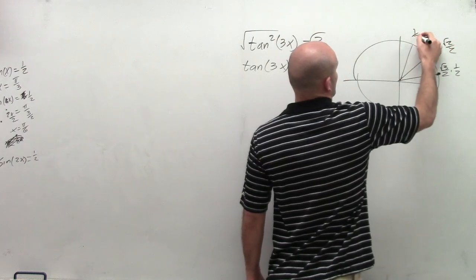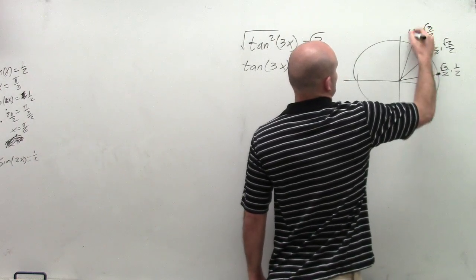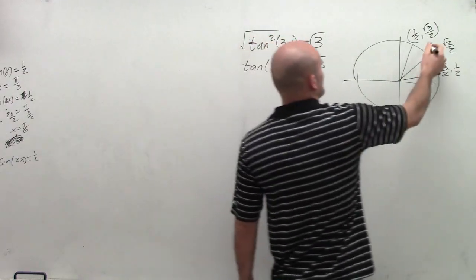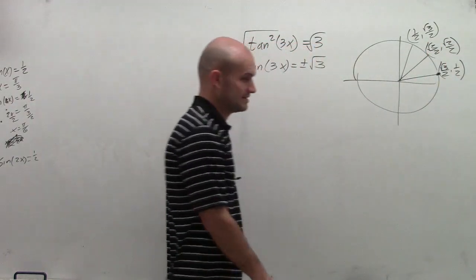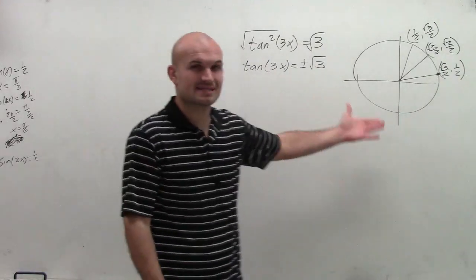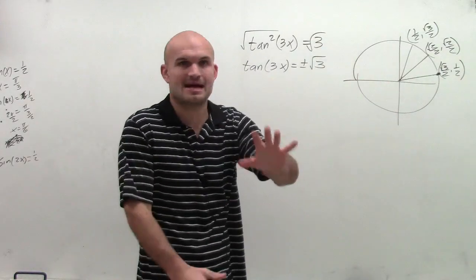Square root of 2 over 2, comma, square root of 2 over 2. And then 1 half, comma, square root of 3 over 2. So remember, the tangent of your point on the unit circle represents the y-coordinate over the x-coordinate. Now, I've shown this a couple many times. I'm just going to kind of breeze over it. I have many examples of me showing the work.